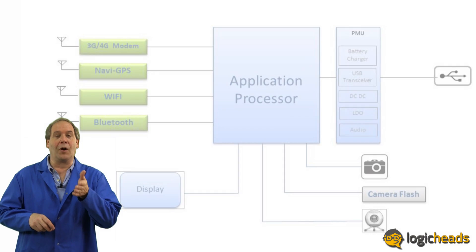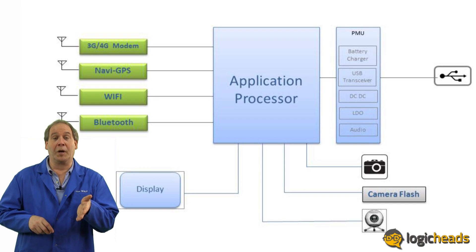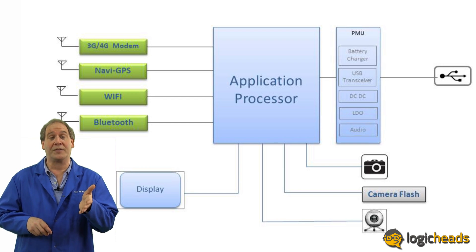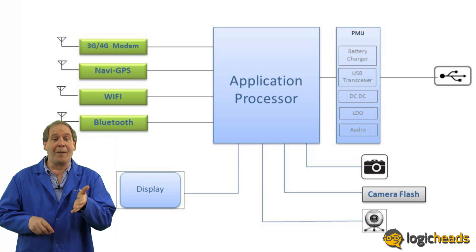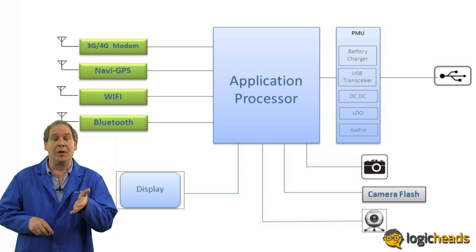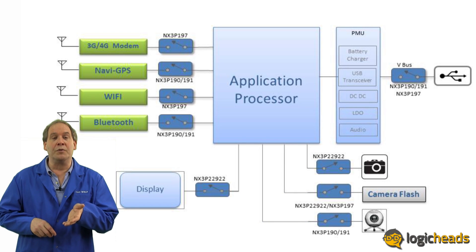For example, your phone has an RF section for the phone, but it also has a Wi-Fi transceiver and likely a Bluetooth transceiver as well. Not every application needs all three of these RF sections to operate at the same time, so load switches can be used to simply turn off the sections that are not needed.